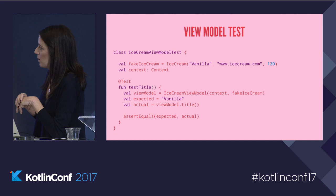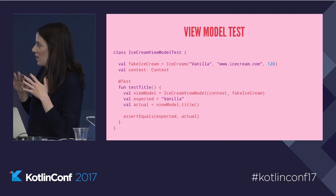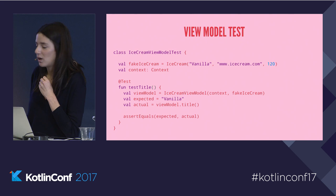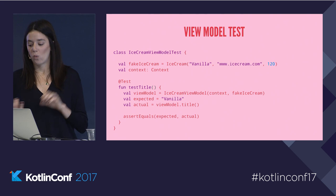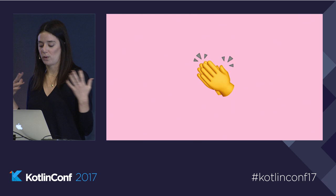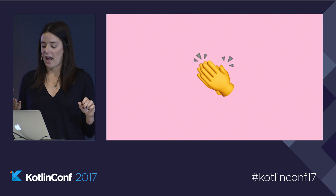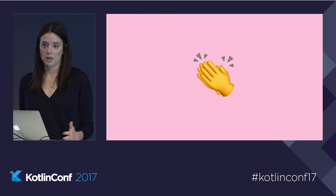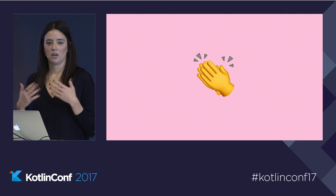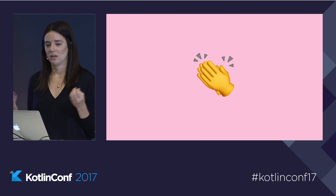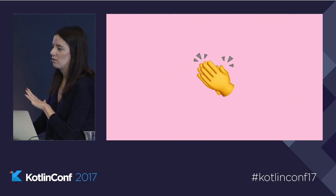In our IceCreamViewModel test, we can create a fake ice cream object, get the context however you want — JUnit or Robolectric — then we create an object, have an expected and actual value, and assert they're equal. So we have our tests back. We have a well-tested way of updating our UI while maintaining a high-level overview of what's happening. Our presenter is protected, we have the same amount of test coverage as before, and from a code review perspective it's much easier to see what's happening. If a future UI change comes, it would only be reflected in the IceCreamViewModel.